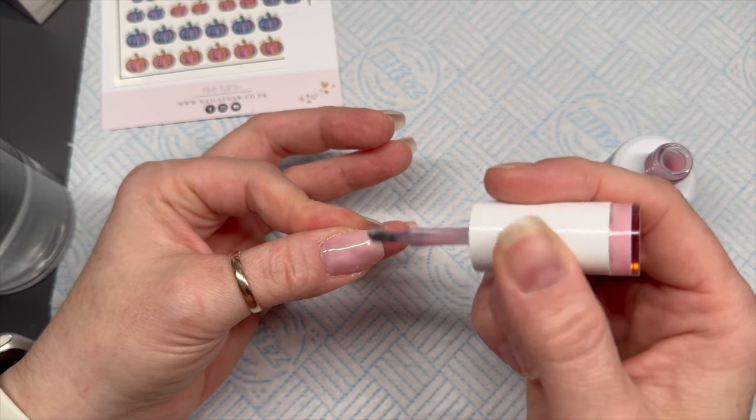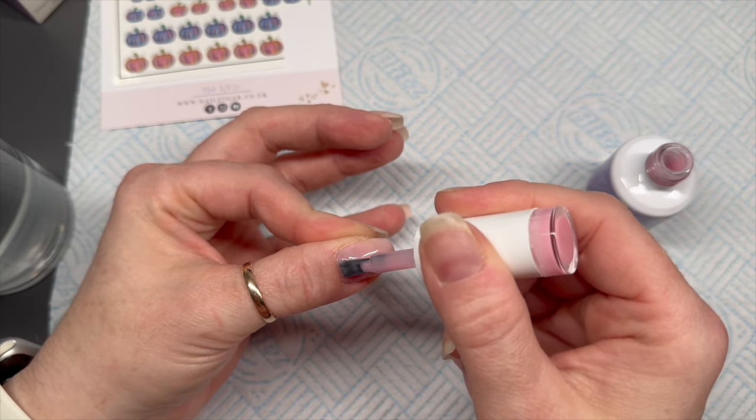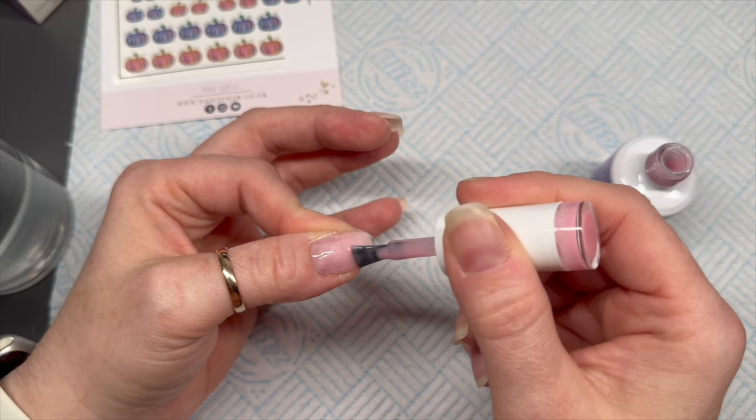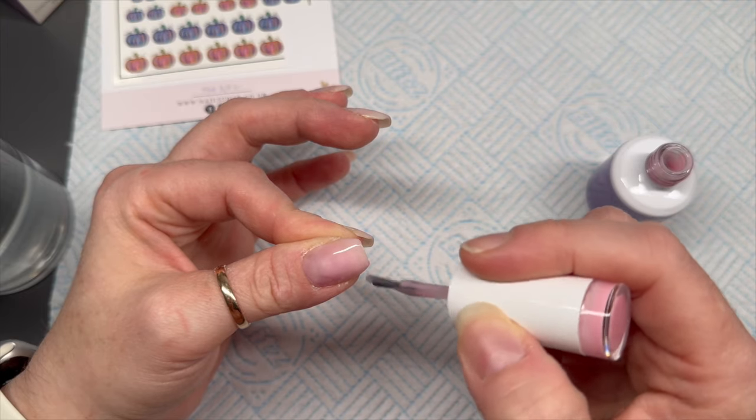So all I've done is literally dehydrate my nails. And now I'm going to go in with my product, because this is a strengthening gel, but it is actually a rubber base. So I'm going to use it to strengthen my natural nails.